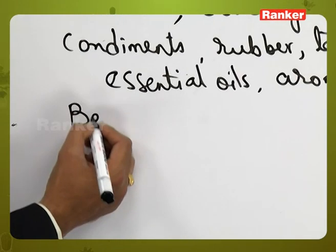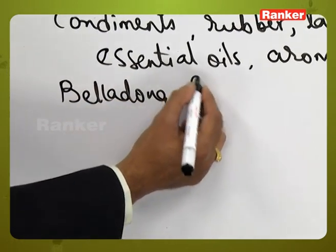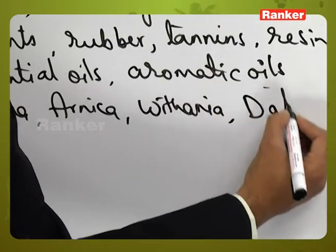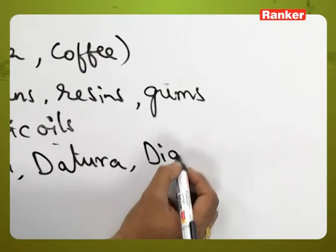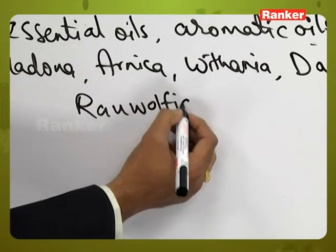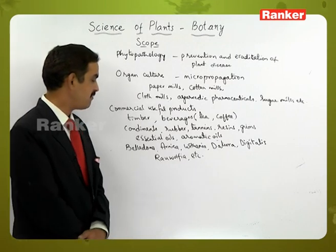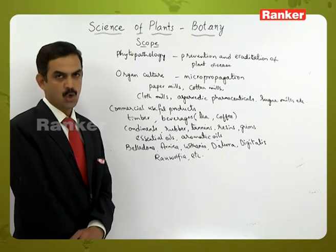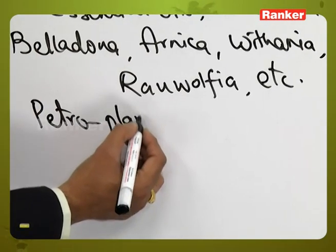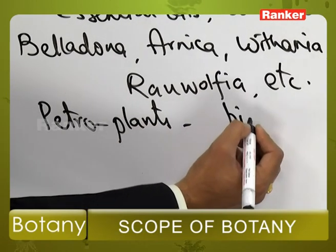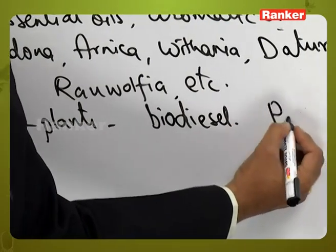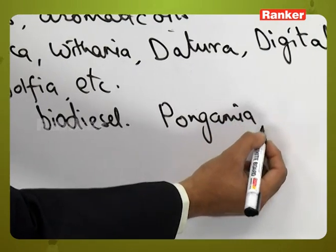Many plants have medicinal properties, such as belladonna, arnica, Withania, datura, digitalis, Rauwolfia, and others. Apart from these, there are petro plants that yield diesel — called biodiesel. These plants include Pongamia and Jatropha, which are rich in hydrocarbons.